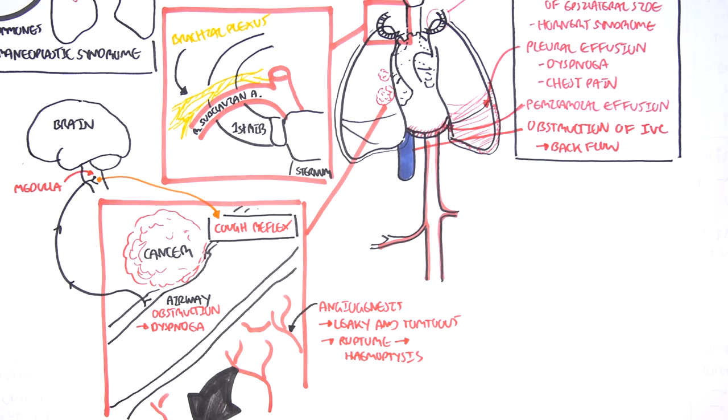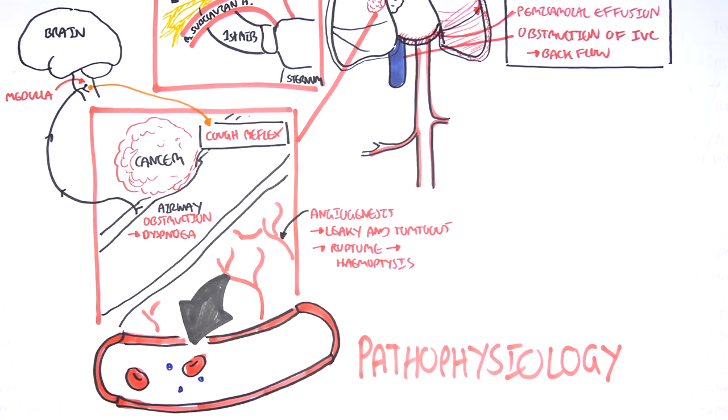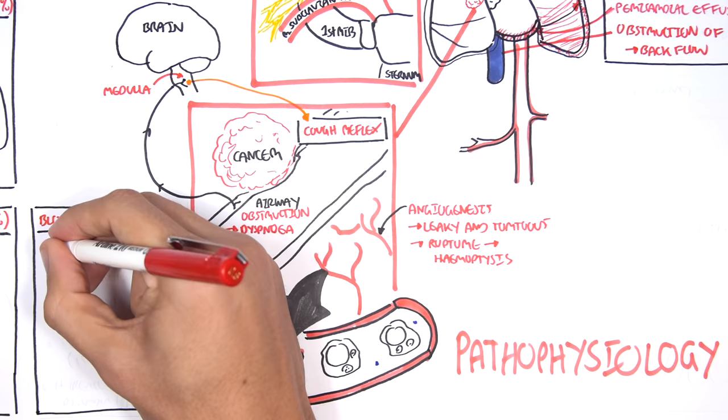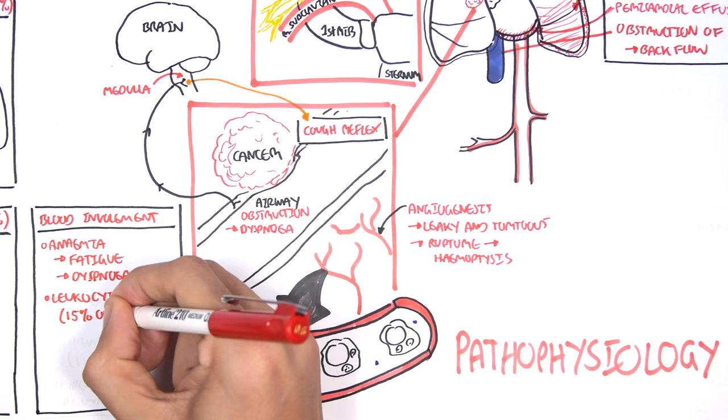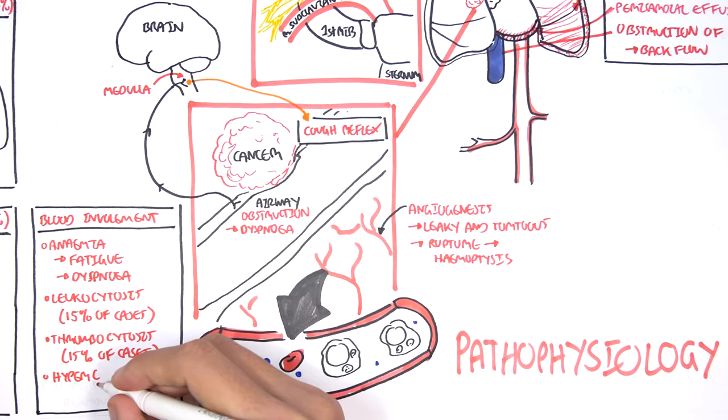Let us zoom into the blood vessels. The blood vessels contain your red blood cells, platelets and white blood cells. In lung cancer, we see some blood involvement, mainly anemia, which leads to fatigue and dyspnea, leukocytosis in 15% of cases, thrombocytosis in 15% of cases, and hypercoagulable disorders.